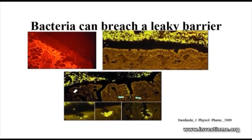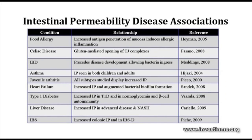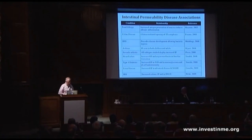Bacteria can take advantage of a leaky gut. In a healthy gut, the mucus provides a barrier keeping bacteria away from the epithelium. With a breach in the barrier, fluorescent bacteria labelled green can be seen starting to contact and actually invade the epithelium — normally kept out, but if the barrier is breached, they can cross into the body with serious consequences. Intestinal permeability has many disease associations: food allergies, celiac disease, inflammatory bowel disease, asthma, arthritis, heart failure, diabetes — the list will probably grow even longer. In some cases it seems to precede disease, in others it's concomitant or follows it.